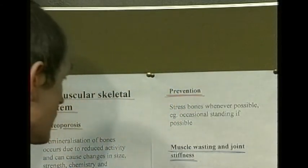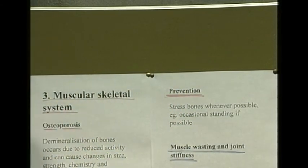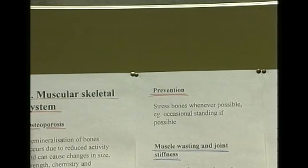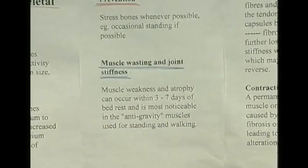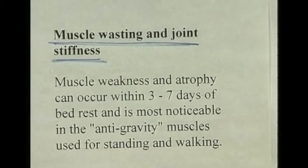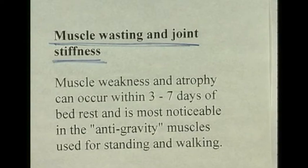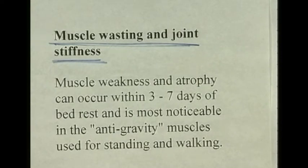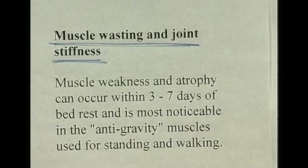Muscle weakness and atrophy occur within three to seven days of bed rest. In any patient immobilized for more than a few days, the muscles begin to atrophy, and connective tissue becomes progressively resistant to movement. Tendons become progressively resistant to movement, and ultimately the joint can become fixed.